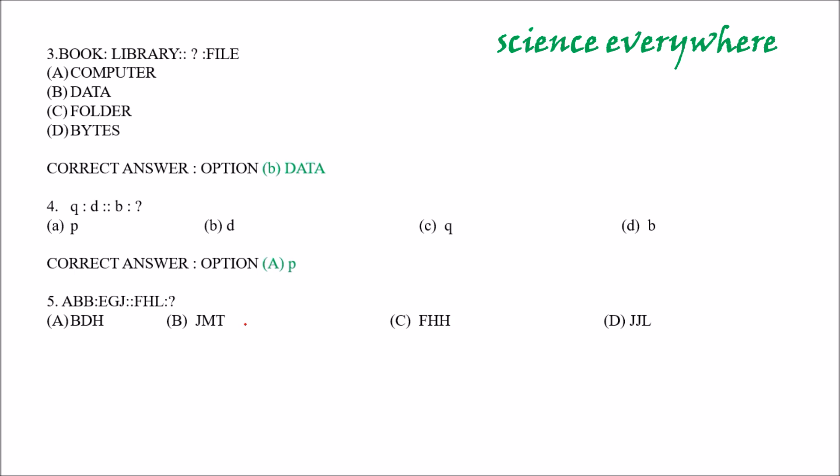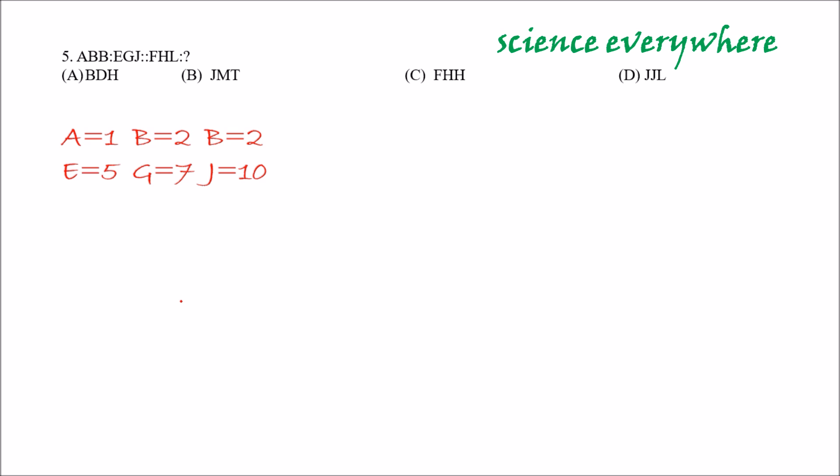In question number 5, you have to find the relationship between the given alphabet that is ABB:EGJ. You have to find what is the relationship between these two groups of alphabet, and apply this same relationship between FHL and the option given here. And you have to find the correct option. So, here the correct option is JMT. And let us see how we have got JMT. In this type of question, first find the place value of the alphabet given. For example, the place value of A is 1, B is 2 and again B is 2. And place value of E, G, J is 5, 7 and 10. You can understand what place value is. That means the position of the alphabet in the alphabetical series. That is its place value.